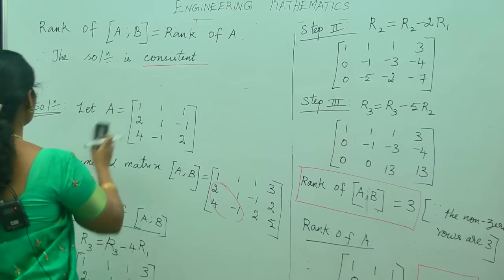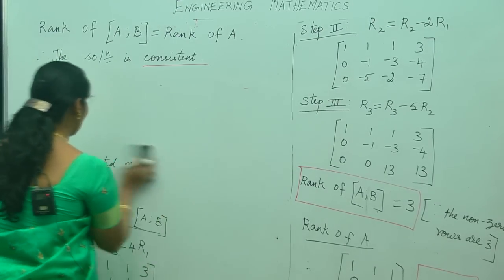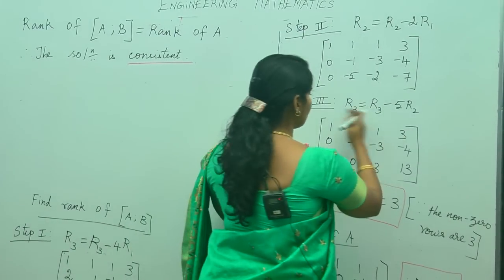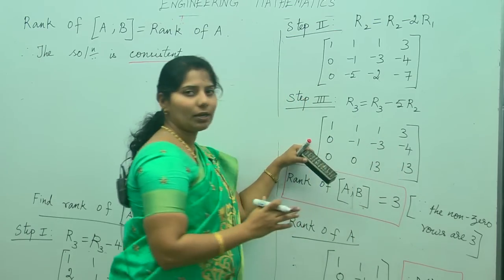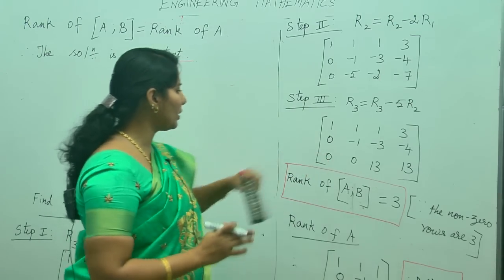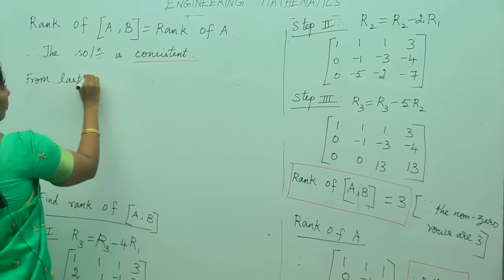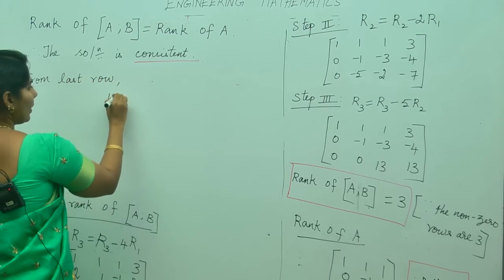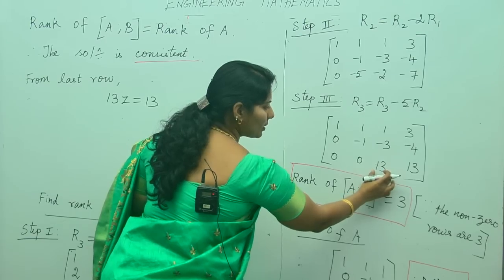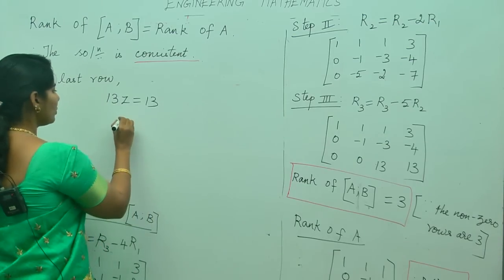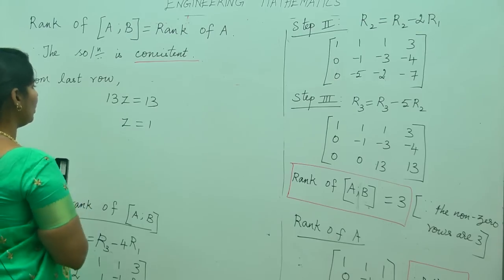We find the solution from the transformed matrix. The transformed matrix is the reduced matrix from the last step. From the last row, we can write 13z equals 13. So z equals 13 divided by 13, which gives z equals 1.